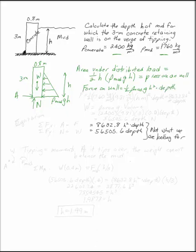So in our case, F is one-half, 1760 kilograms per meter cubed, that's rho of the mud, 9.81 meters per second squared, that's gravity, H meters, that's H squared, times your depth into the page, whatever it is. That gives us 8632.8 H squared times that depth.